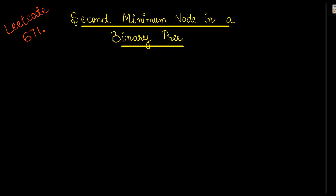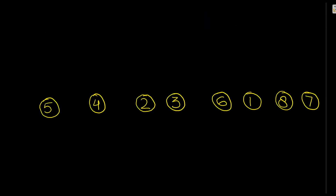Hello all, welcome to Netset OS. Today in this video we'll be discussing LeetCode number 671 - Second Minimum Node in a Binary Tree. Let's understand this question in terms of players.